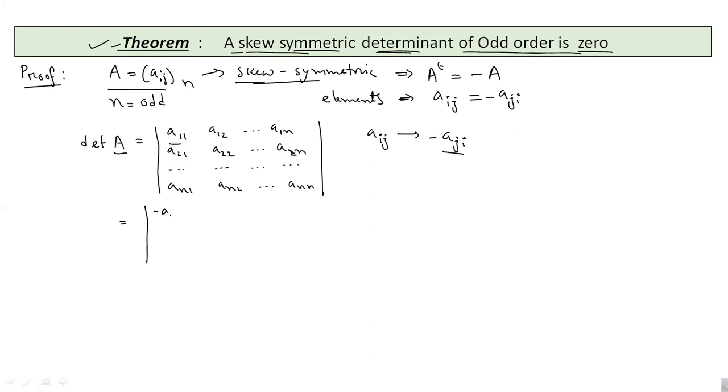So, this a11 will be minus a11, this will be minus a21 and this is minus an1. Similarly, we can write minus a12 to minus a22 to minus an2. Following the similar process, the last row will become minus a1n, minus a2n, minus ann.